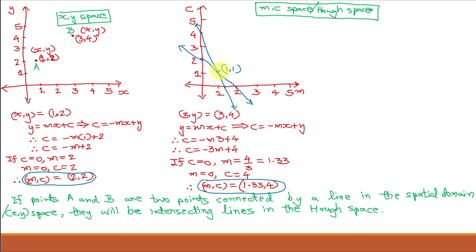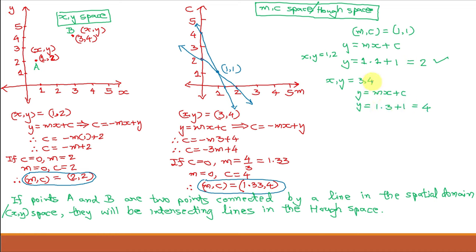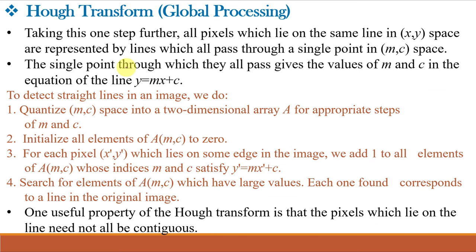If two lines are intersecting in the Hough space, it means they are connected by a line in the spatial domain and both points can be linked — they are collinear points. For the intersection point values placed into Y = MX + C, the value of Y comes out correctly, which cross-verifies the results obtained in the Hough space. Taking this further: all pixels lying on the same line in XY space are represented by lines which all pass through a single point in MC space, and that single point gives the values of M and C in the equation Y = MX + C.